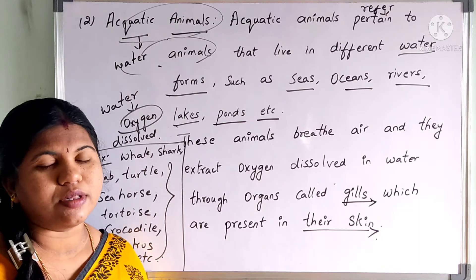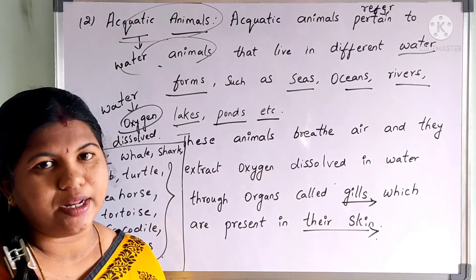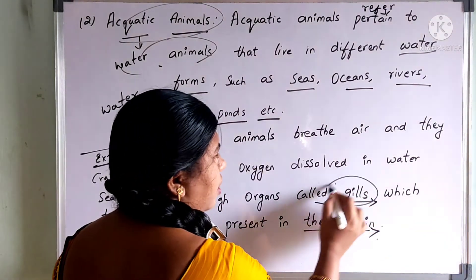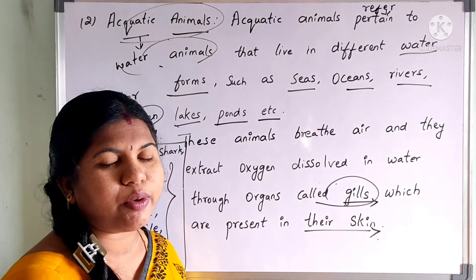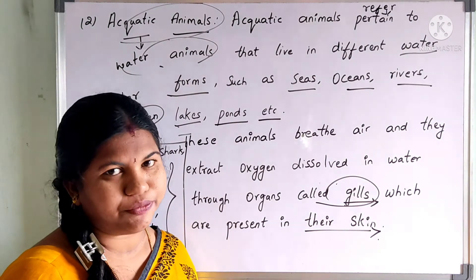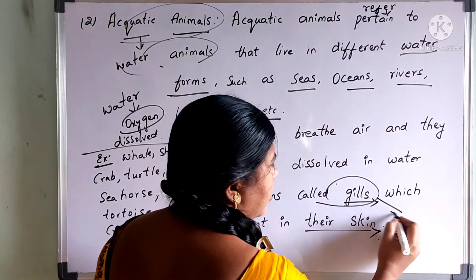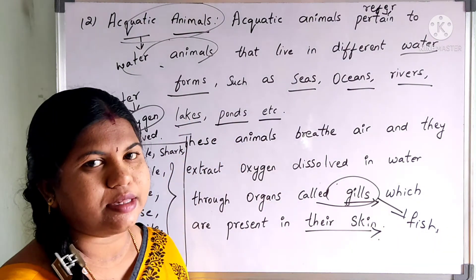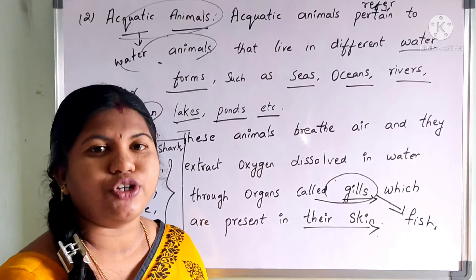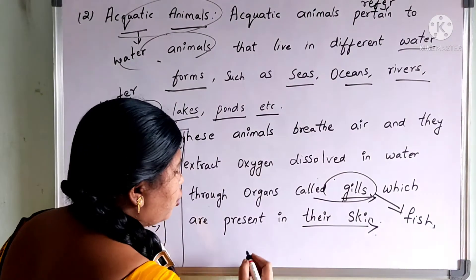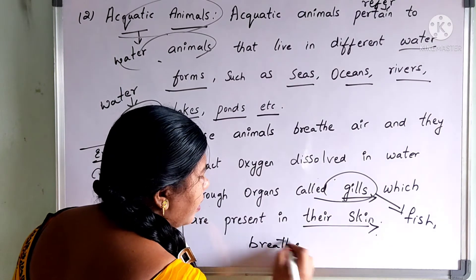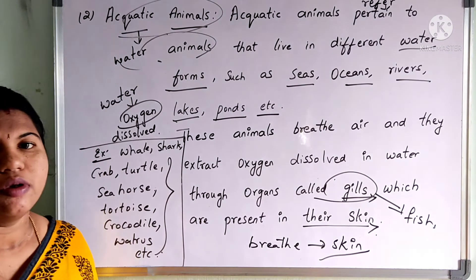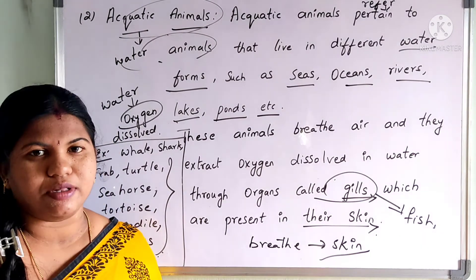One more point regarding aquatic animals — gills are present specially for fishes. But there are some aquatic animals which do not have gills; they breathe with the help of their skin instead.